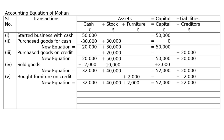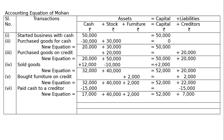Sixth transaction: paid cash to a creditor 15,000. Cash will be reduced by 15,000 and creditors will be reduced by 15,000. Then there will be a new equation.